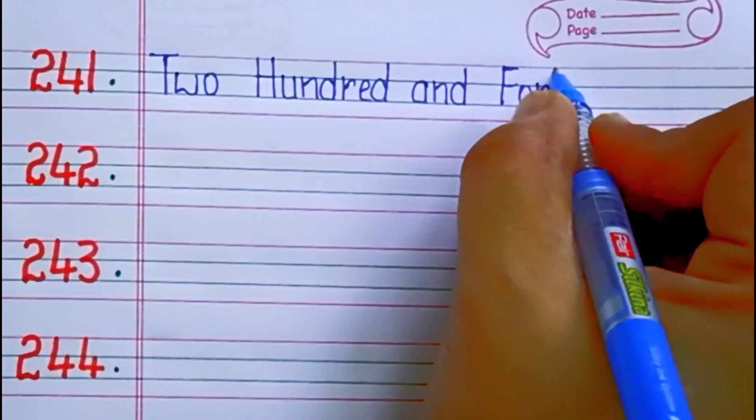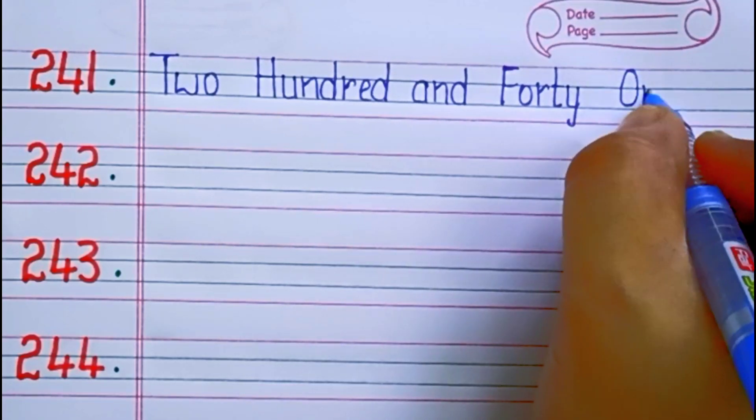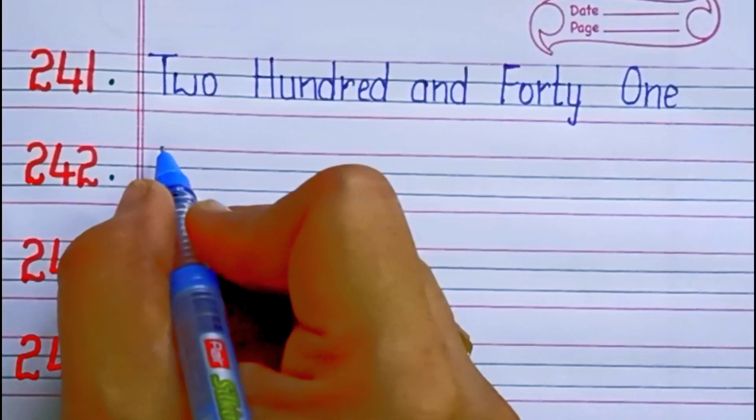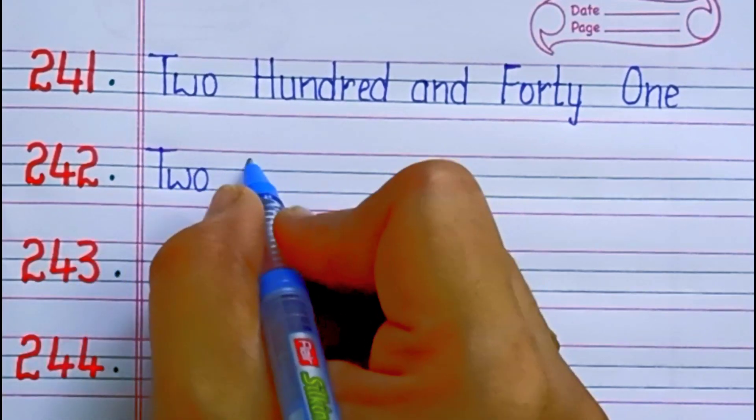241. Two hundred forty: F-O-R-T-Y, 40. O-N-E, 1. Two hundred forty-one.